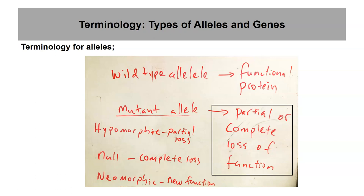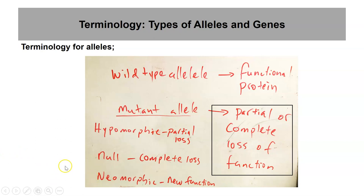If a mutation produces a partial loss of function, that's referred to as a hypomorphic mutant allele. If it produces a complete loss of function, that's referred to as a null allele — no function. Occasionally and rarely, a mutation will produce what's called a neomorphic allele, where the mutation produces a protein that has a new function — 'neo' meaning new function. That's pretty rare.